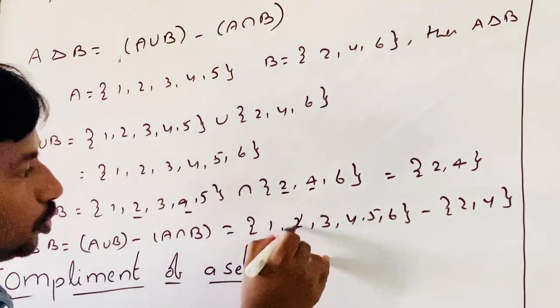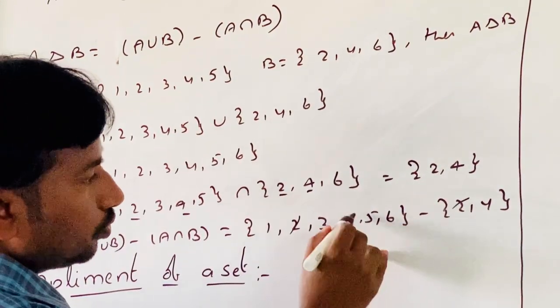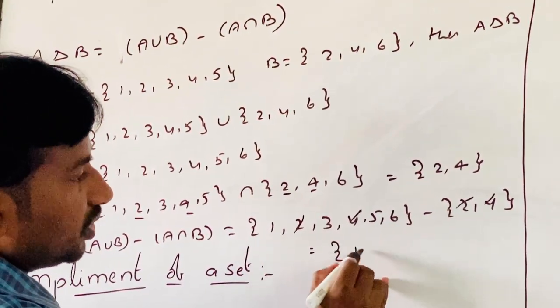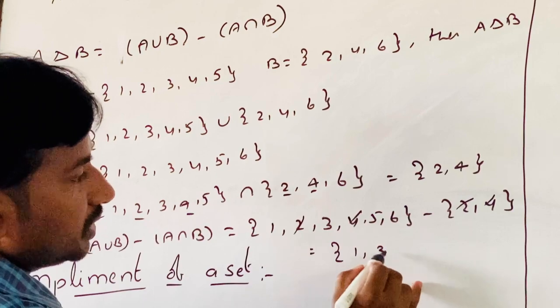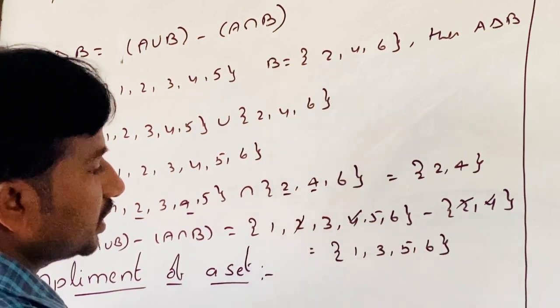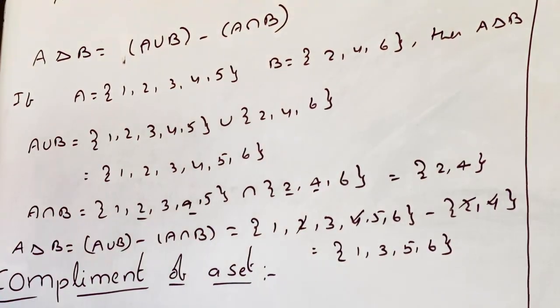Removing elements 2 and 4 from the union, the remaining elements are 1, 3, 5, 6. So A delta B equals {1, 3, 5, 6}.